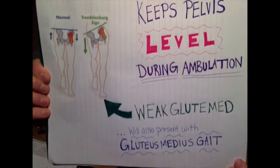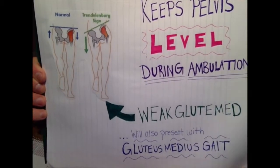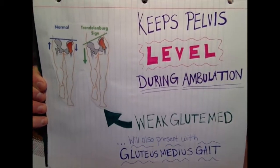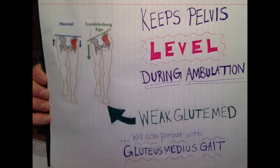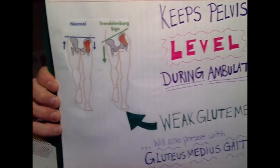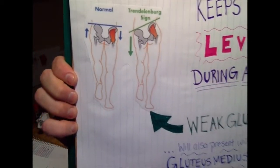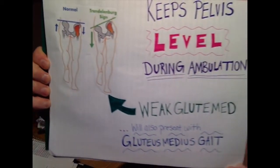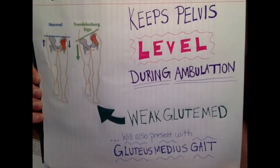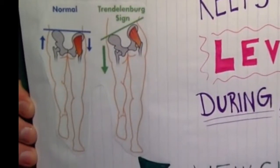Because the gluteus medius muscle is a powerful hip abductor, it is also responsible for keeping the pelvis level during ambulation. When the gluteus medius muscle is weakened, patients will present with a positive Trendelenburg sign.